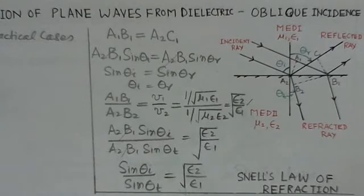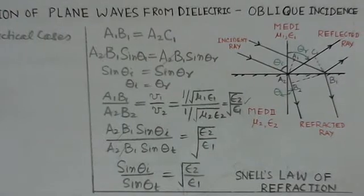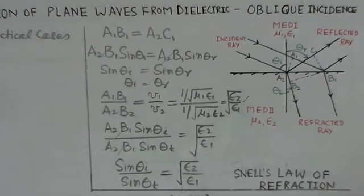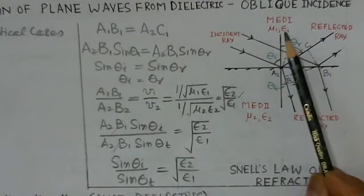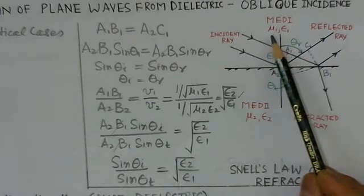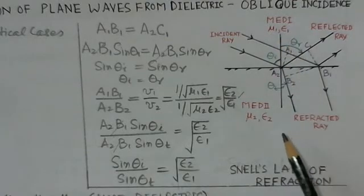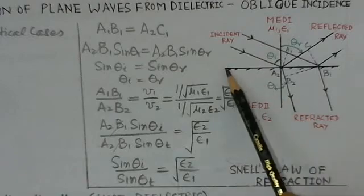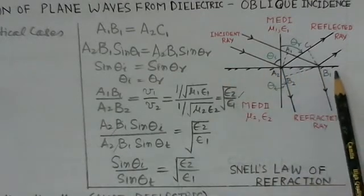So we will see the equation, but how to derive the equation for Snell's law. Now here we consider two media. There is medium 1 having the media parameters like mu 1 epsilon 1, and medium 2, mu 2 epsilon 2, and this plane separating the two media.